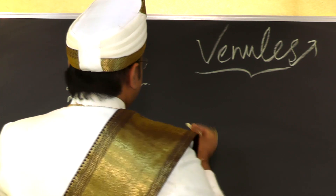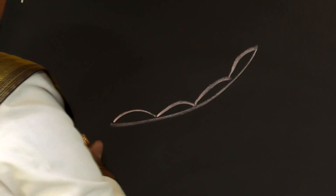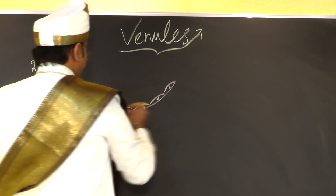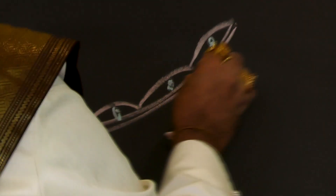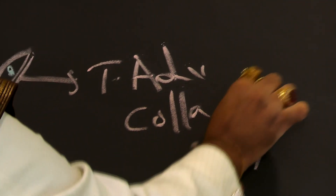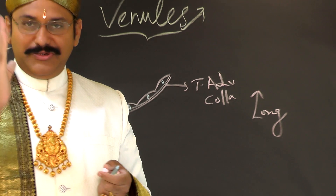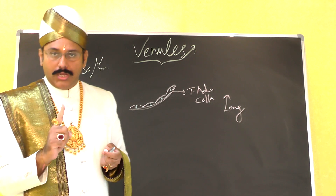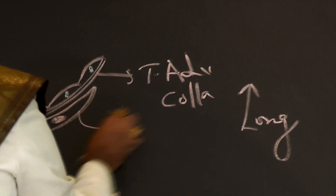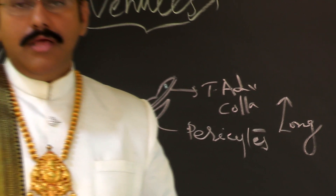Microscopically, venules have an endothelium — a single layer of squamous cells resting on a basement membrane. Surrounding this is a tunica adventitia made up of collagen fibers running longitudinally. There are also very flat cells called pericytes in close approximation with the endothelium of the venule.